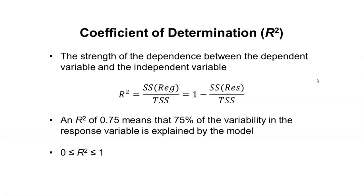The R squared value, or what we call the coefficient of determination, measures the strength of the dependence between the dependent variable and the independent variable.